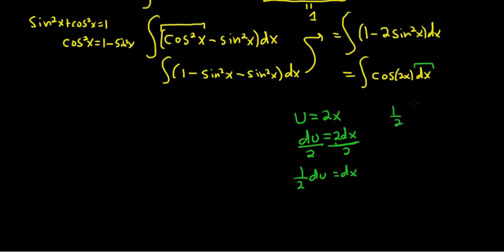So this becomes 1 half du, right, replacing the dx. And we're left with cosine u. When we integrate cosine, we ask ourselves, what's a function whose derivative is cosine? Well, the derivative of sine is cosine.